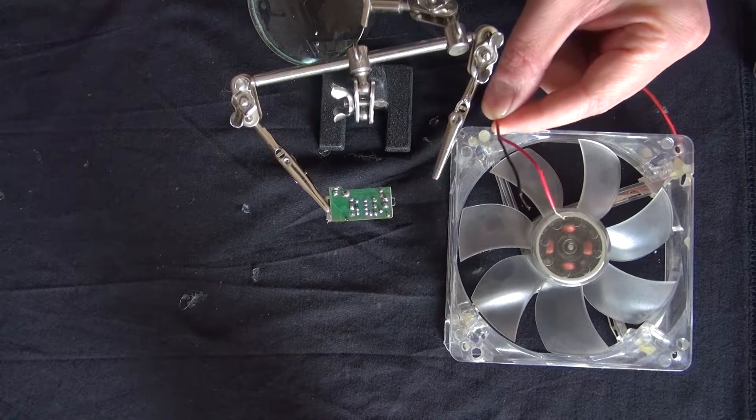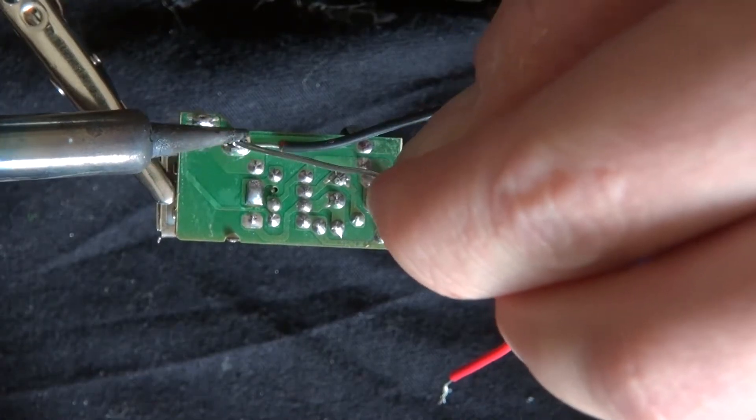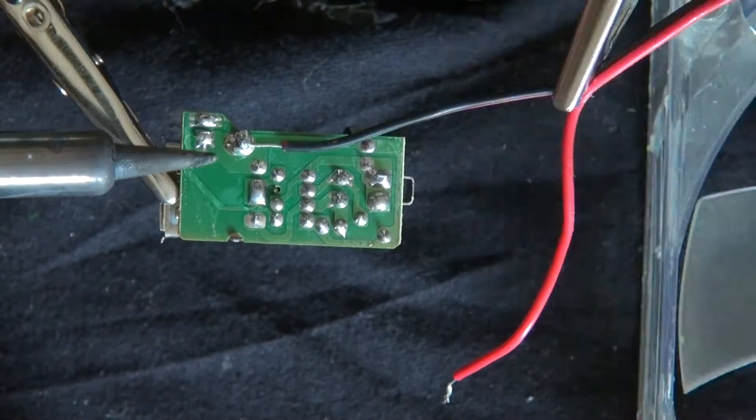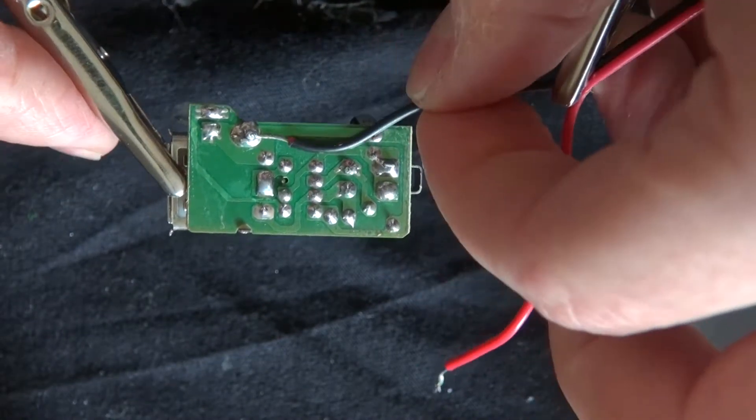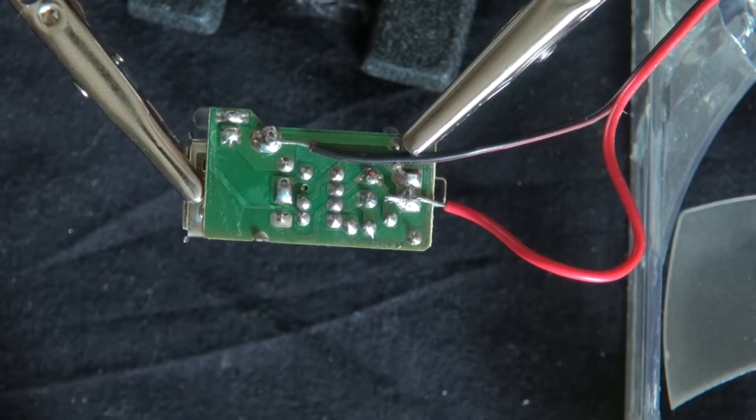Now what I'm going to do is solder the wires directly to the PCB of the car phone charger. The negative wire goes to the negative connection, and the positive wire goes to the positive section.